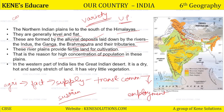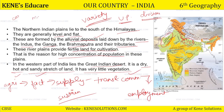In the western part of India lies the Great Indian Desert — it is a dry, hot and sandy stretch of land, and it has very little vegetation. Hamare India ke ekdam western kone mein hai Great Indian Desert. Toh humne cover kar liya mountains, especially the Himalayas, plain region, and the desert.